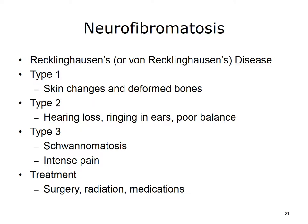Neurofibromatosis is a genetic disorder of the nervous system that mainly affects how nerve cells form and grow, causing tumors to grow on nerves. You can get neurofibromatosis genetically from your parents, or it can happen because of a mutation in your genes, and once you have it, you can pass it along to your children. There are three types: Type 1 causes skin changes and deformed bones and usually starts at birth; Type 2 causes hearing loss, ringing in the ears, and poor balance, often starting in the teen years; and schwannomatosis, the rarest type, causes intense pain. There is no cure. Treatment is directed at controlling symptoms and may include surgery to remove tumors, radiation therapy, and medicines.